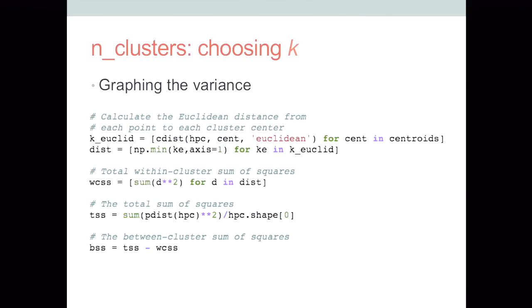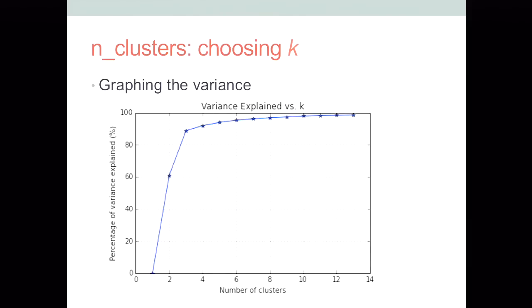And then I pull out the cluster centers for each model. The k-means estimator object comes with different attributes, and one of them is the cluster centers attribute. Then we calculate the euclidean distance from each point to each cluster center. We get the total within cluster sum of squares, the total sum of squares, and then the between cluster sum of squares. And if we graph that, we get this. So this is a pretty typical graphing the variance graph. You can see adding clusters at first dramatically accounts for the variance, but it plateaus later on.